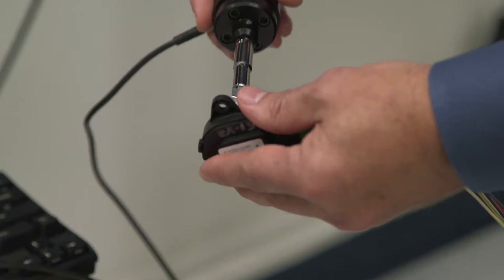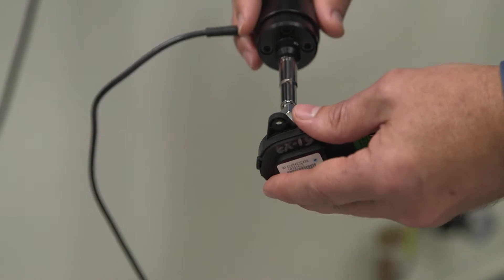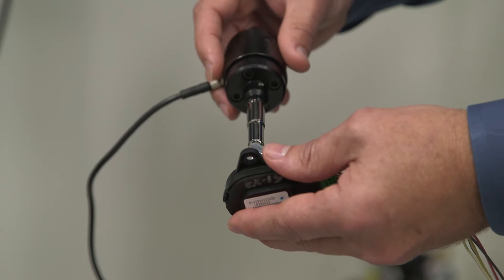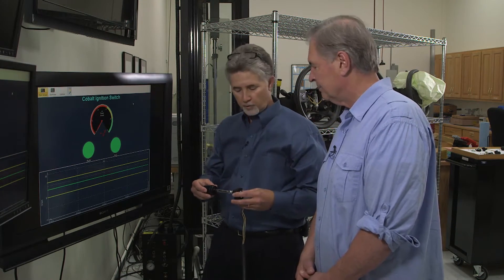Once we engage it with the torque cell, as I activate the switch, the run light will go from green when it's in the run position to red when the switch goes to the accessory position, and then we'll get an indication or a peak along the graph at the bottom that shows how much torque there is in this switch.